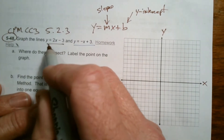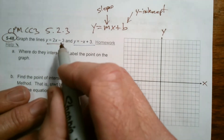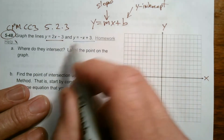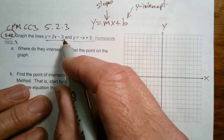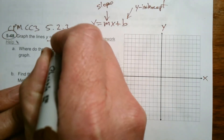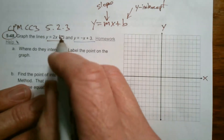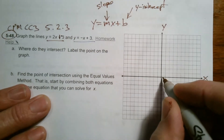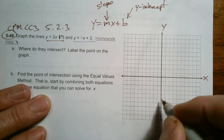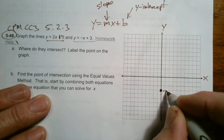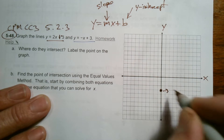I'll use y equals 2x minus 3 first. My y-intercept, my b, is negative 3. So I locate negative 3 on the y-axis — that's 1, 2, 3 down. Right there is where y is negative 3, and that's going to be the y-intercept.